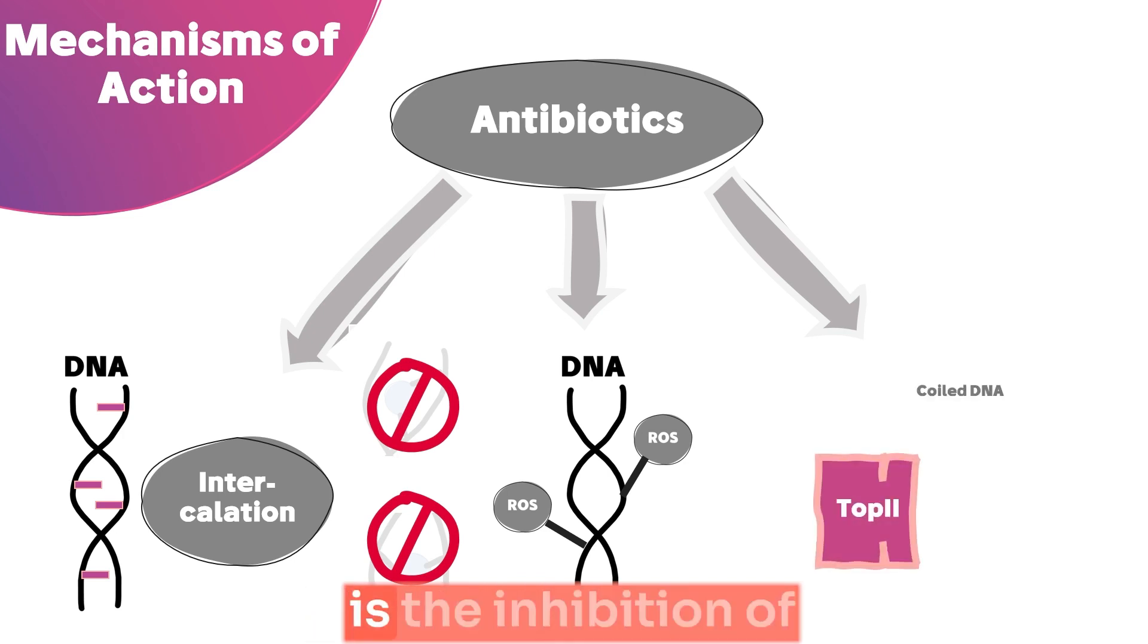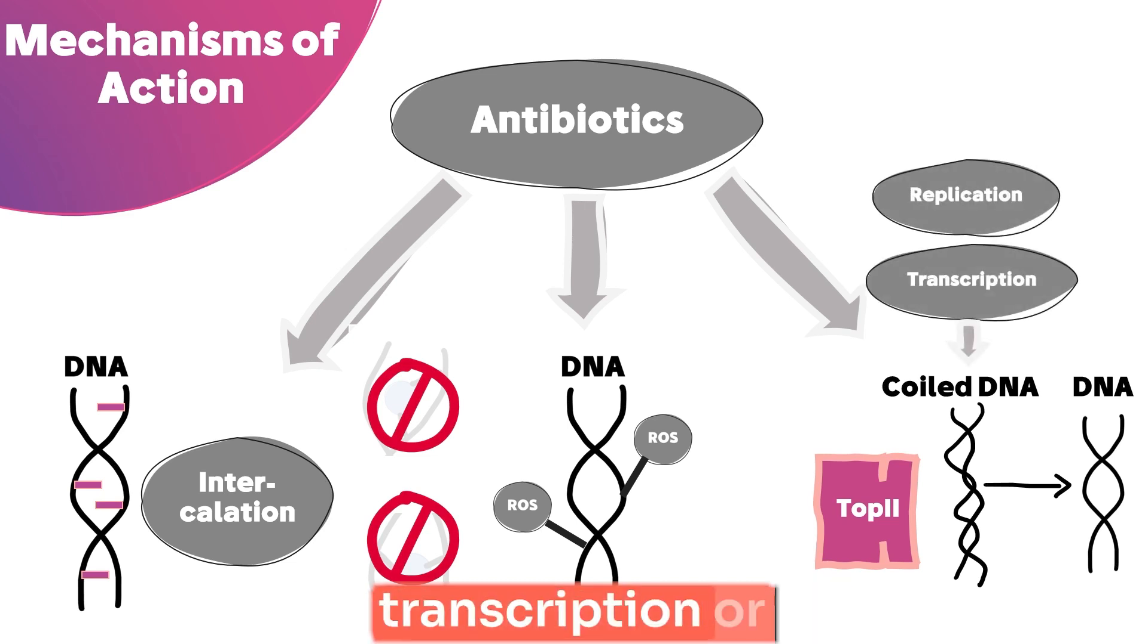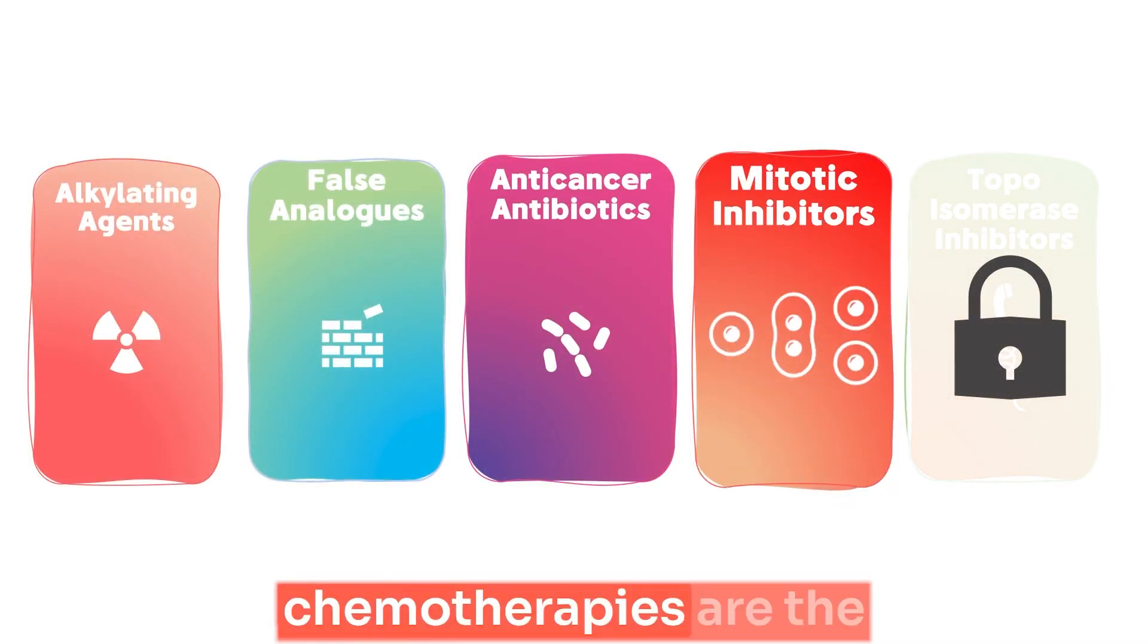The third mechanism is the inhibition of topoisomerase 2. Simply put, this enzyme unwinds the supercoiling generated from either transcription or replication of the DNA.